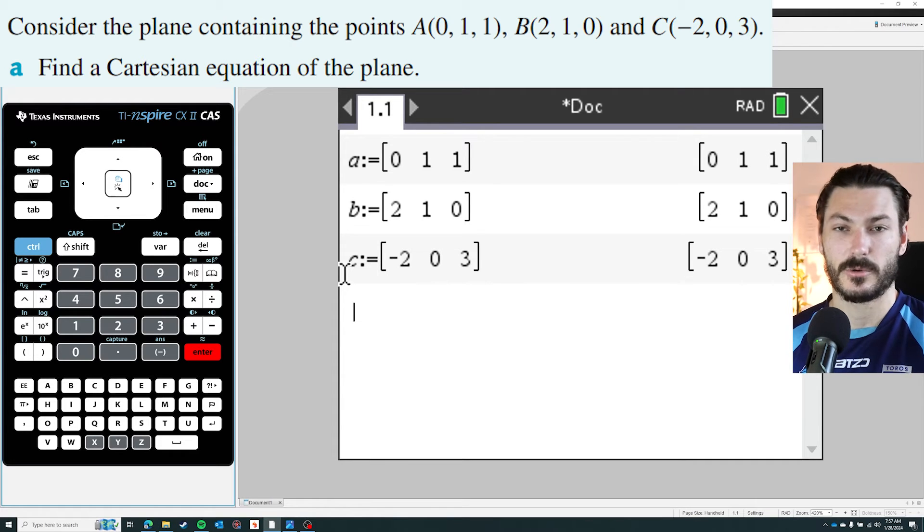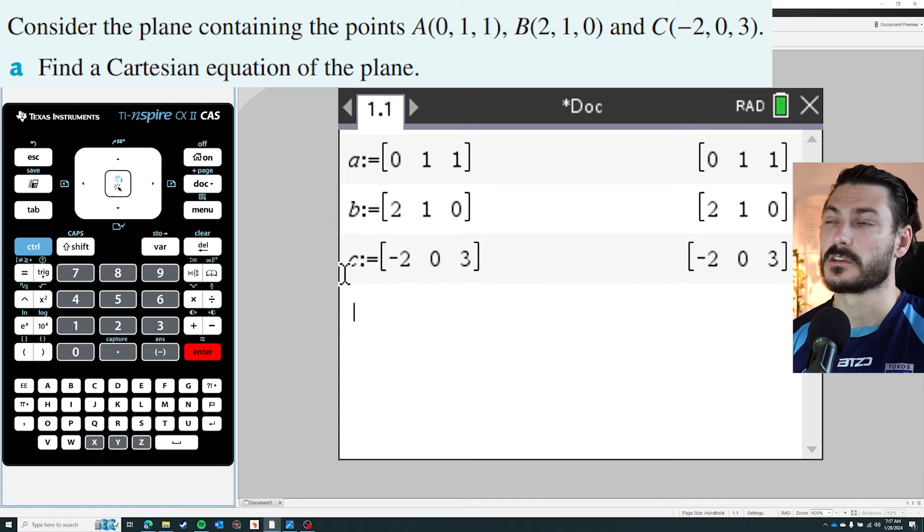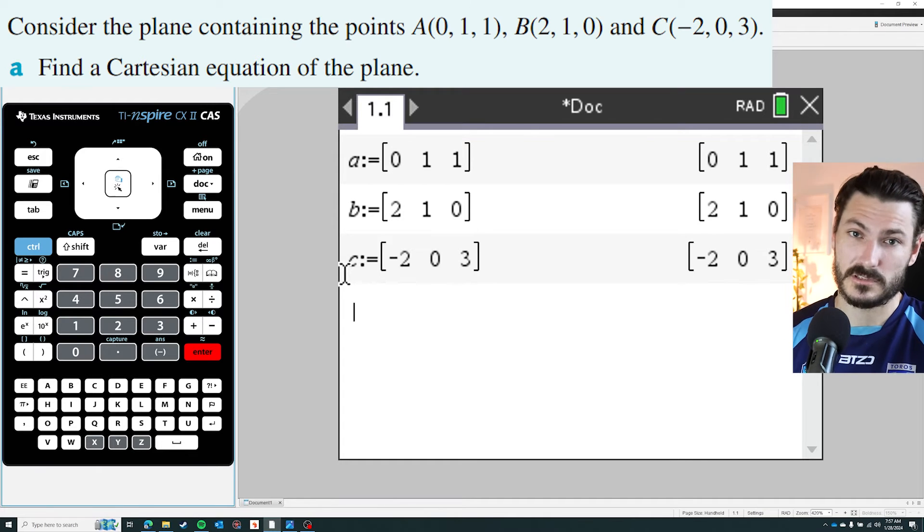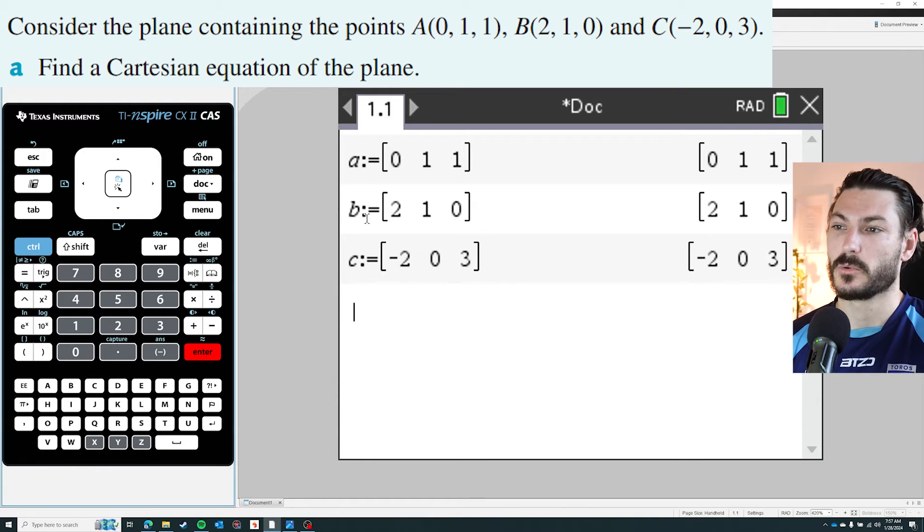In order to find the Cartesian equation of the plane, which is what the question wants, I need to find a normal to the plane which is going to require finding two vectors on the plane. So we're going to use these three points to generate two vectors. So I'm going to generate the vector AB and I'm also going to generate the vector AC.